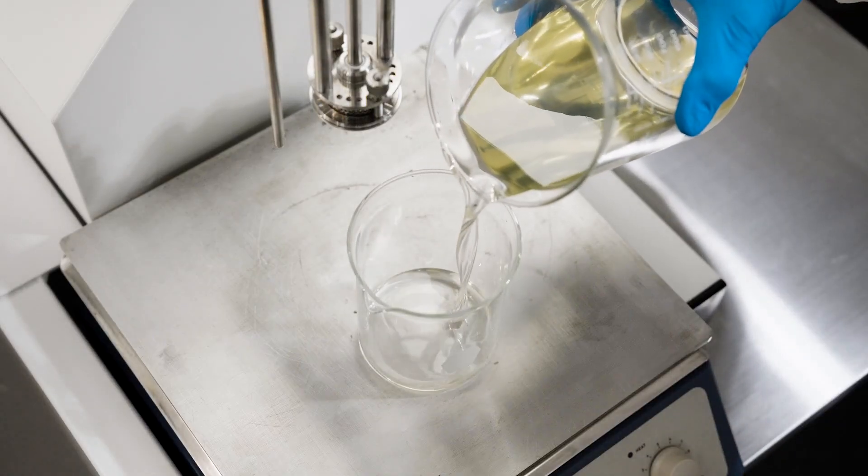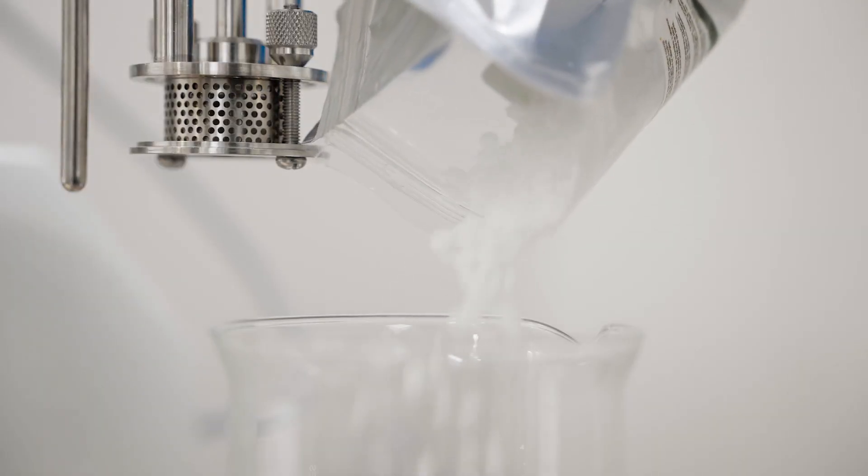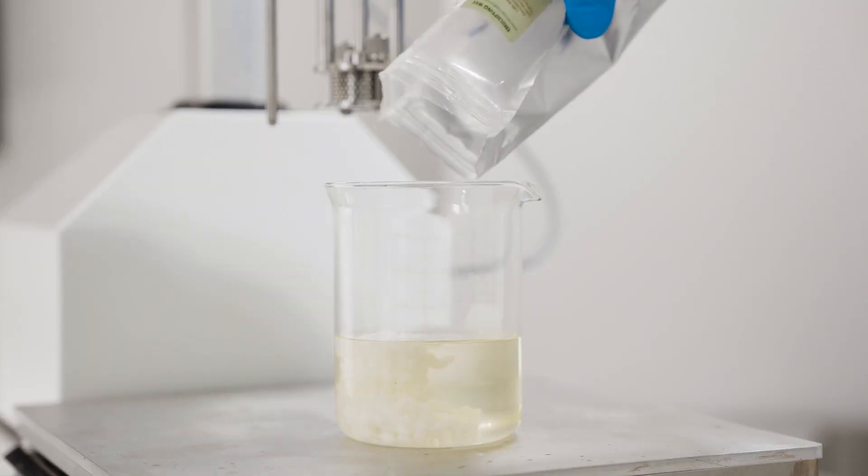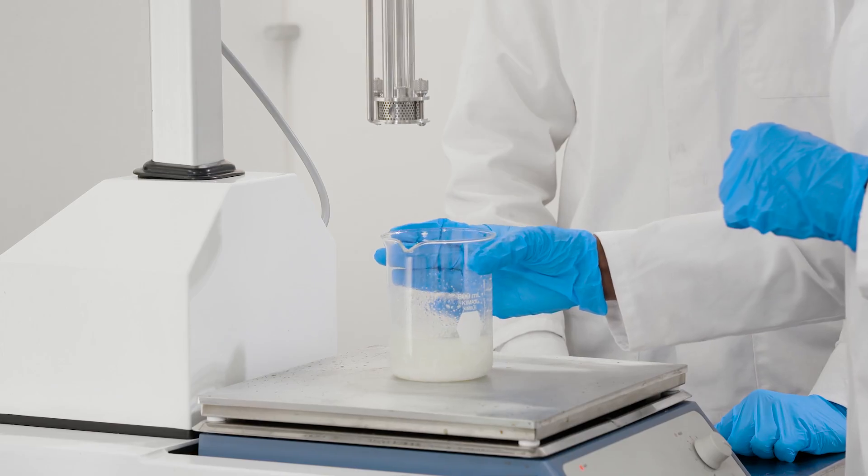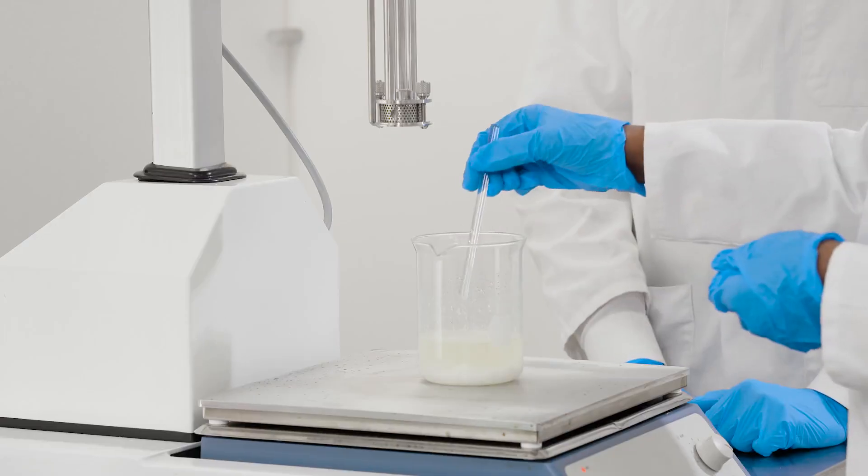We have here our oil phase which is isopropyl myristate, sweet almond oil, and some emulium delta which is a wax blend. As the wax is currently in solid bead form, we're going to pop it down on this hot plate for a little while, wait for that to melt.